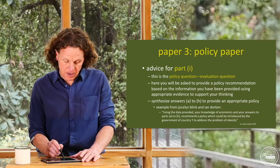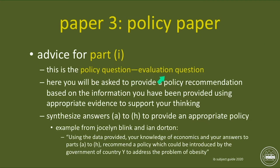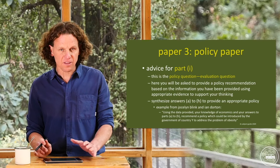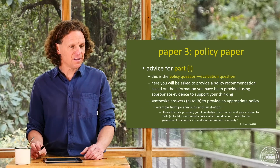Then for part I, this is where your policy question comes in. This is essentially an evaluation question. You'll be asked to provide a policy recommendation based on the information you have been provided, using appropriate evidence to support your thinking. You are going to synthesize your answers A to H to provide an appropriate policy. Jocelyn Blank and Ian Dorton in their IB course companion provided this example question: 'Using the data provided, your knowledge of economics, and your answers to parts A through H, recommend a policy that would be introduced by the government of country Y to address the problem of obesity.' Part I is evaluation in Paper 3 — just as part G in Paper 2 is evaluation, and part B in Paper 1 is evaluation.